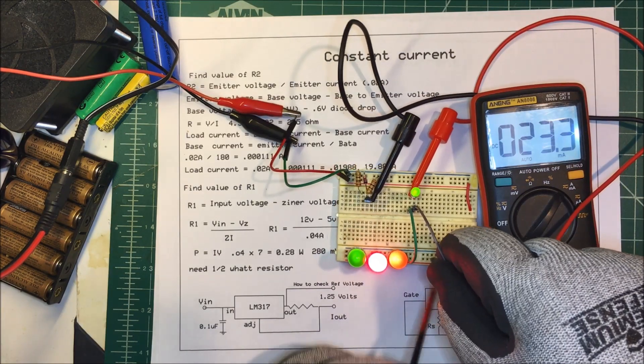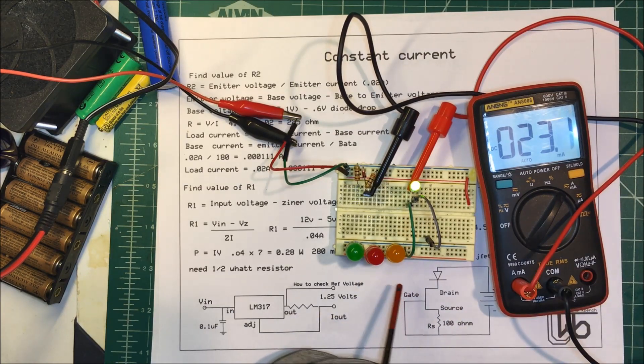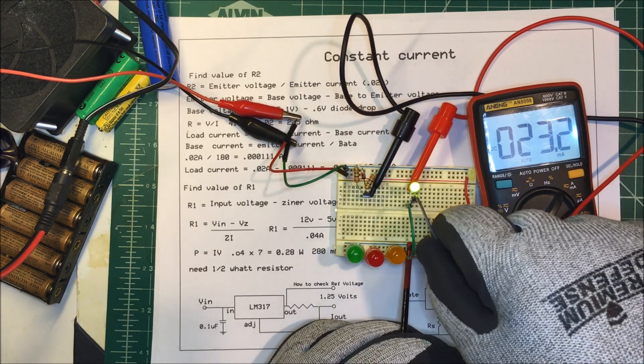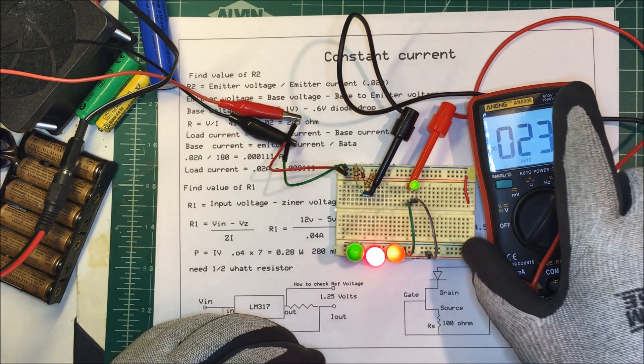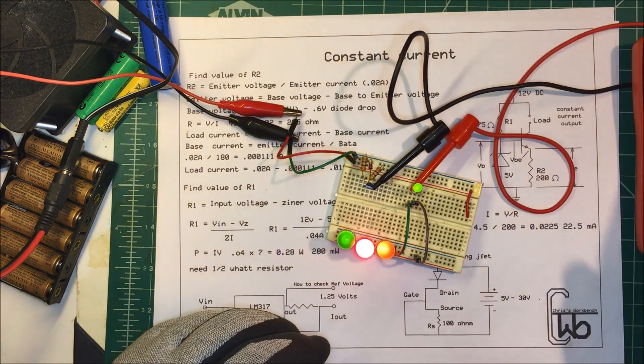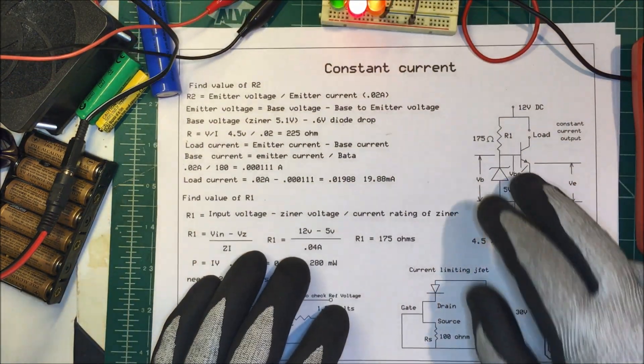If I pull that out, I still have my 23 milliamps which I want. And if I add the other LEDs, 23 - so I'm maintaining the current. Of course the voltages can drop off a little bit, but that's constant current. That's a good little unit.